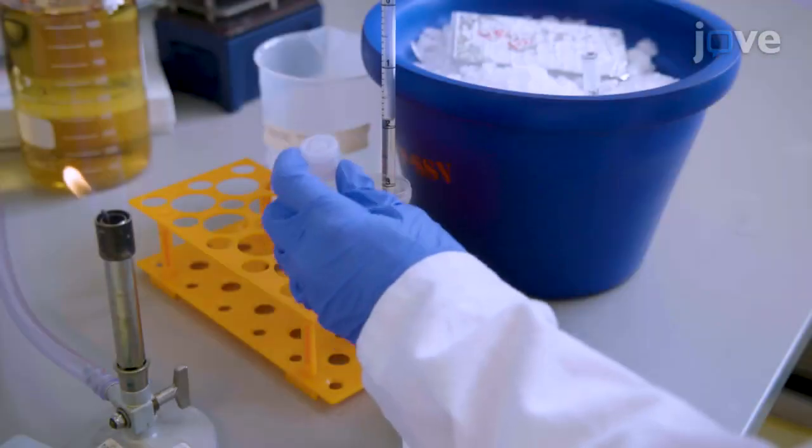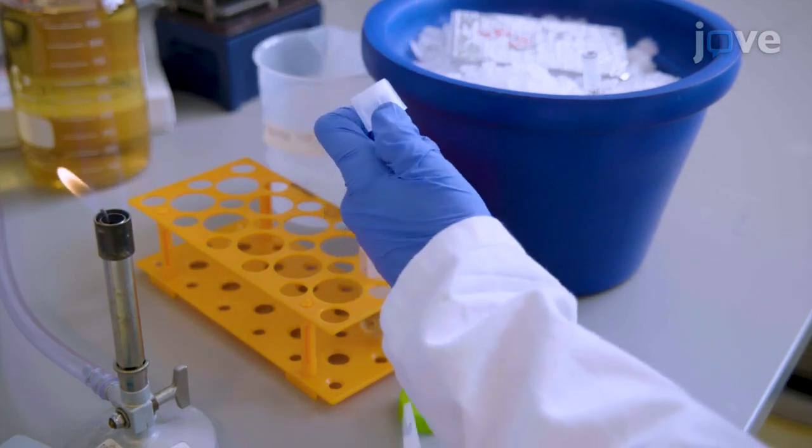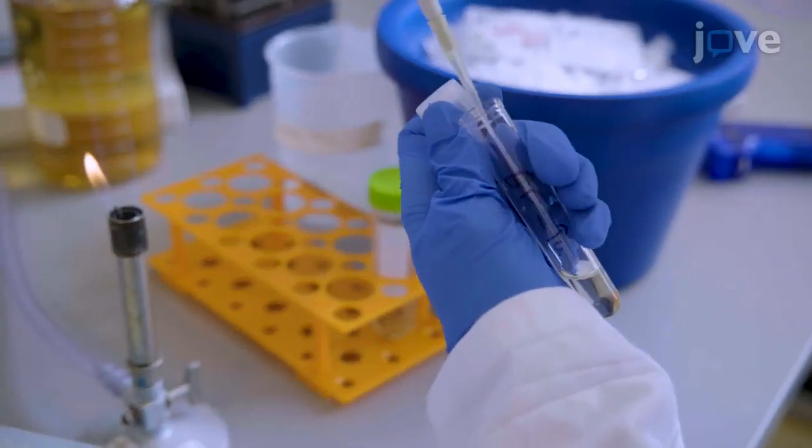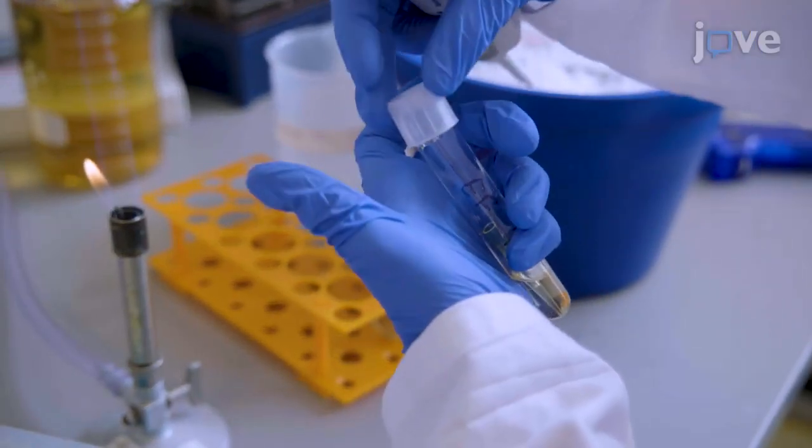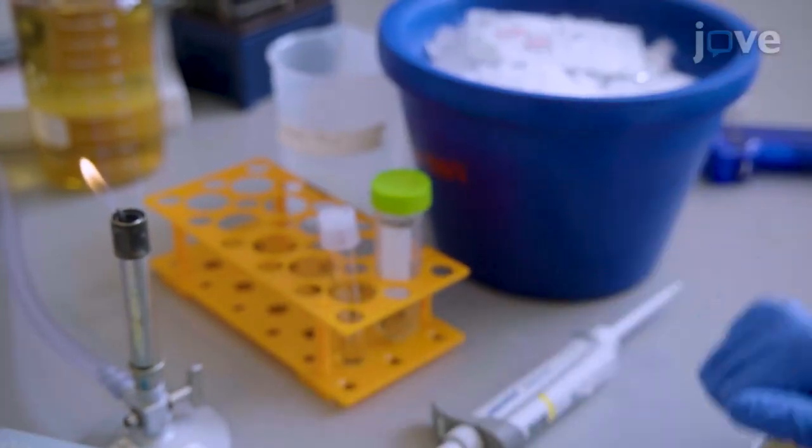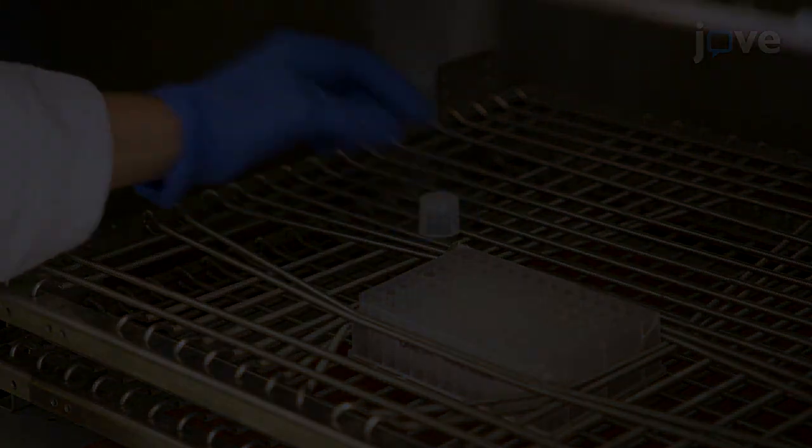For the EF-TU culture, inoculate 3 mL of ampicillin-containing LB media in a 14 mL culture tube with a snap cap. About 3 mL of EF-TU culture is sufficient for one one-pot expression culture. Incubate it at 37 degrees Celsius while shaking at 260 RPM.